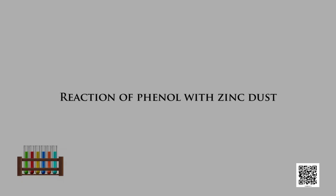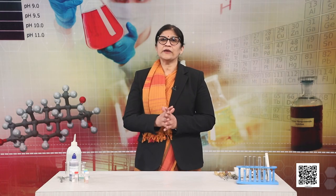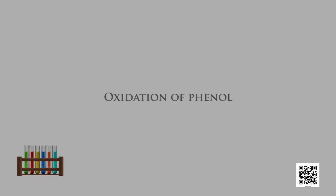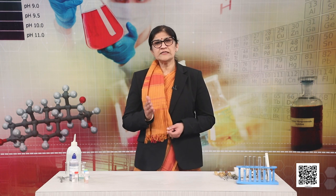The next reaction is the reaction of phenol with zinc dust. Phenol is converted to benzene on heating with zinc dust — this is the only reaction in which the carbon-oxygen bond in phenol can be cleaved. Then, oxidation: oxidation of phenol with chromic acid produces a conjugated diketone known as benzoquinone. In the presence of air, phenols are slowly oxidized to a dark colored mixture containing quinones.